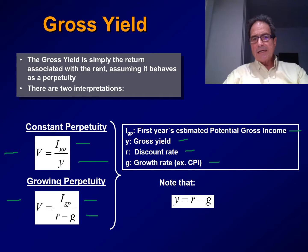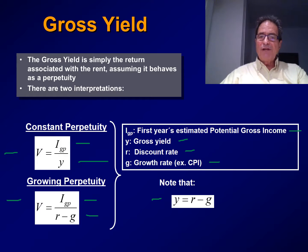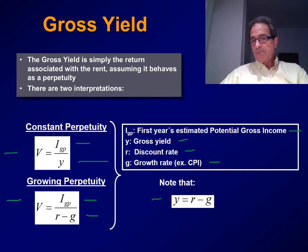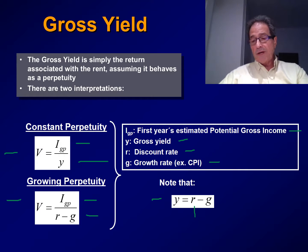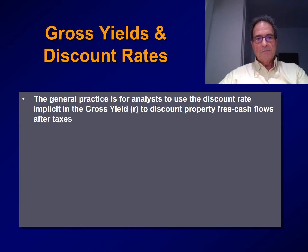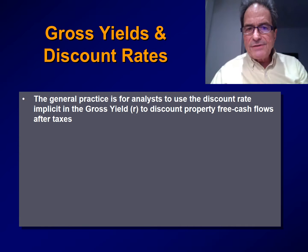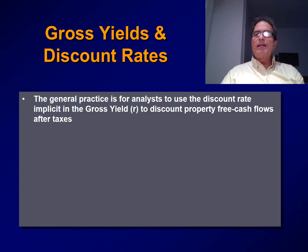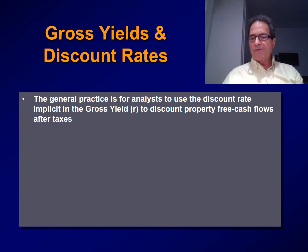Note that if we assume a growing perpetuity, then the yield is equal to the discount rate R minus G. Or, you can also think that the discount rate R will be the yield plus the growth rate. The general practice is for analysts to use the discount rate implicit in the gross yield, the rate R, to discount property free cash flows after taxes.